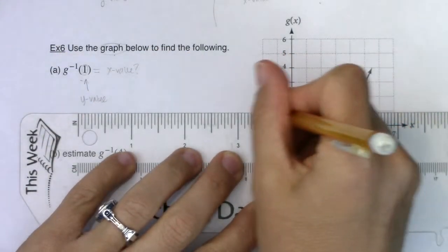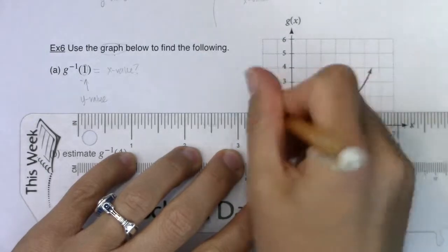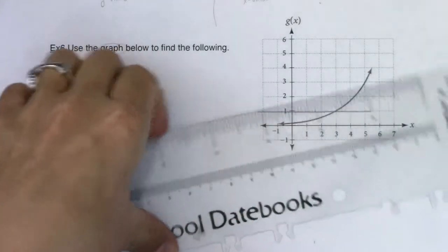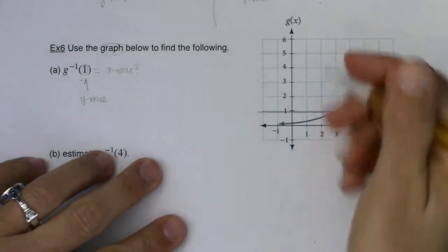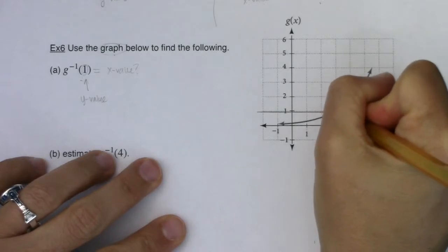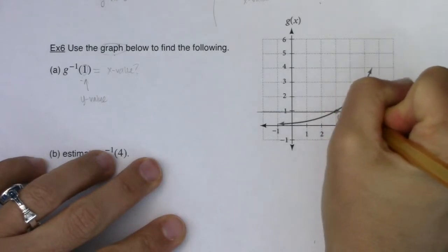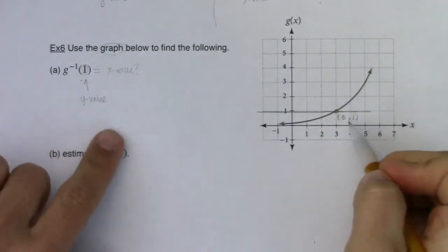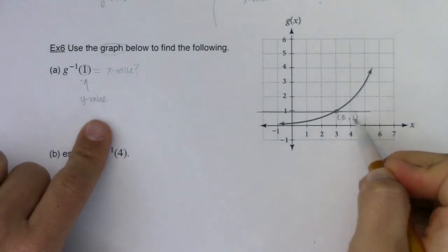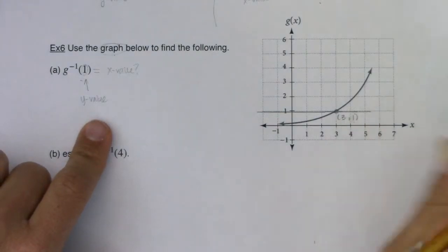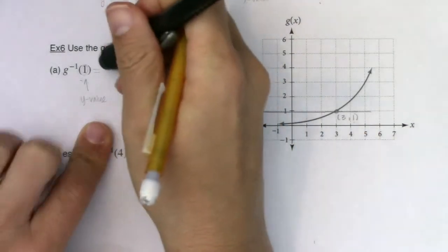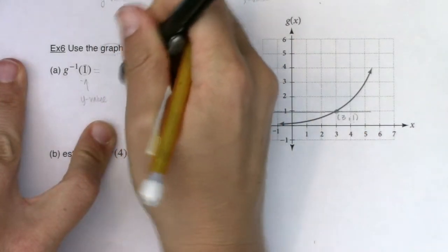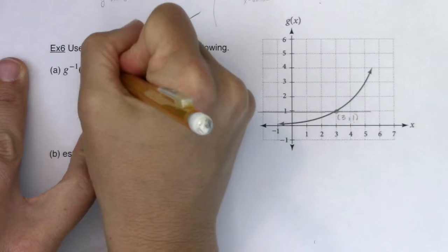Here's the line y equals 1. Let's see where y equals 1 intersects with my function. I can see it hits right on that grid point of 3 comma 1. So what x value gave me a y value of 1? It was an x value of 3. So then g inverse of 1 is equal to 3.